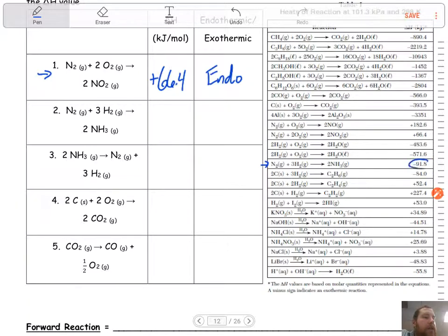So that means all I have to do is write that number down. Negative 91.8 kilojoules per mole. It's a negative value, which means it's going to be exothermic.